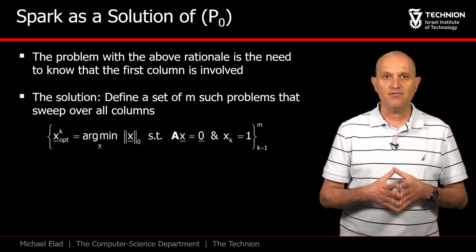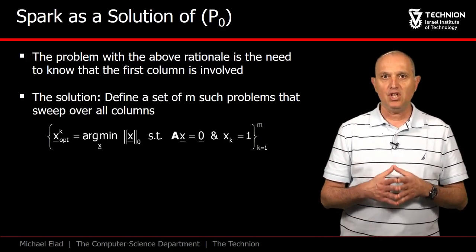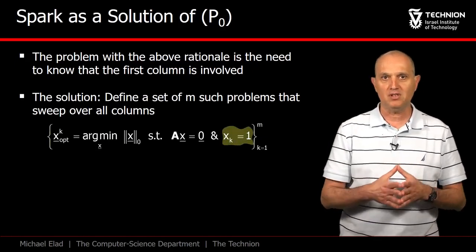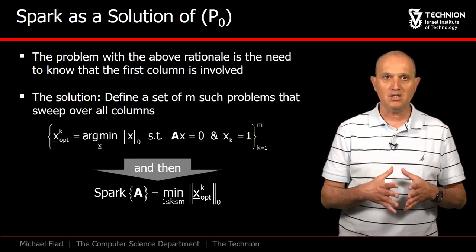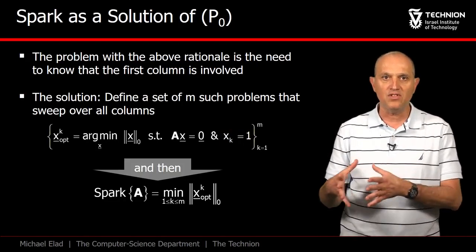Therefore, we propose to define m different optimization tasks, each forcing a different column to participate in the solution. Once we found the m solutions, the spark is the cardinality of the sparsest of these solutions.